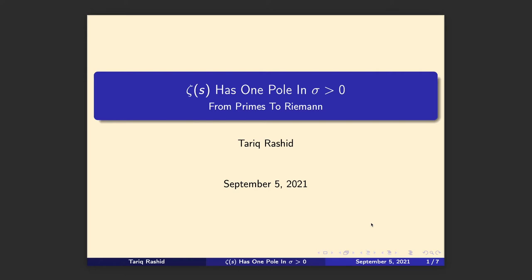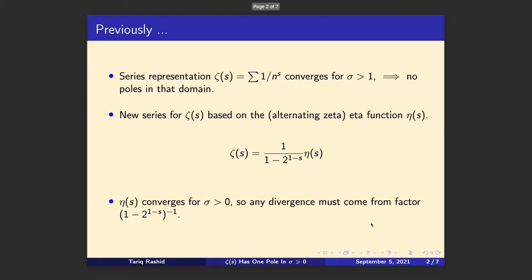It's actually quite a nice proof which I was inspired by somebody online — I'll include the link so you can see the credits — because it turns a really difficult problem into something quite neat. So let's start at the beginning. We initially had the series representation for the Riemann zeta function of the form 1 over n to the s, and we know that it converges for sigma, the real part of s, more than one. We've done that lots of times; go back and look at those previous videos if you need a reminder.